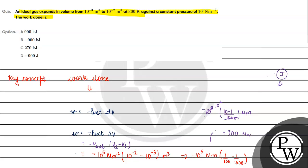Which unit is work? We have force into displacement. Force unit is Newton, displacement unit is meter — so Newton meter. We can write this as Joules. Therefore the answer is minus 900 Joules. This is option D, and option D will be the correct answer for this question.